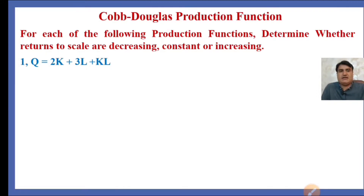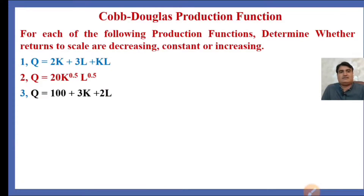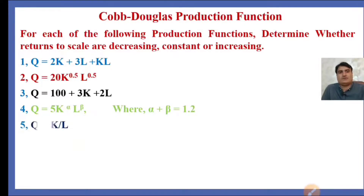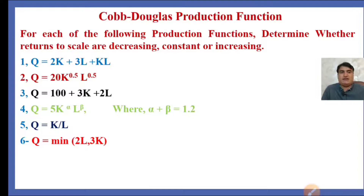The question is: for each of the following production functions, determine whether returns to scale are decreasing, constant, or increasing. Production function 1: Q = 2K + 3L + KL. Production function 2: Q = 20K^0.5 L^0.5. Production function 4: Q = 5K^α L^β where α + β = 1.2. Production function 5: Q = K/L. Production function 6: Q = min(2L, 3K).